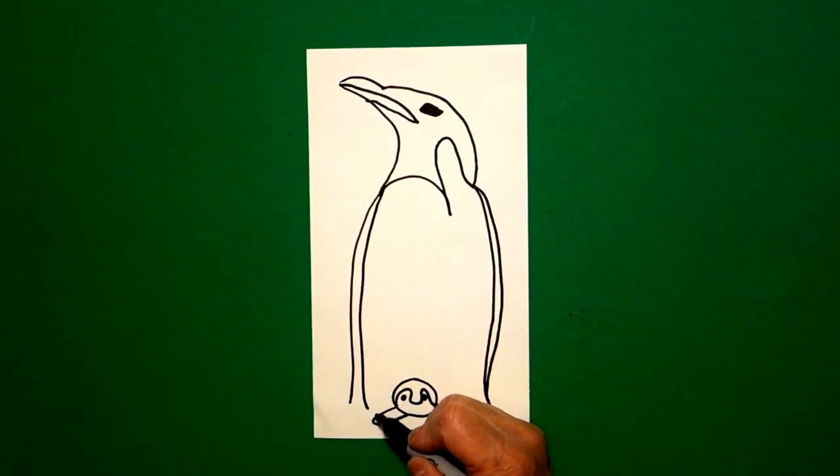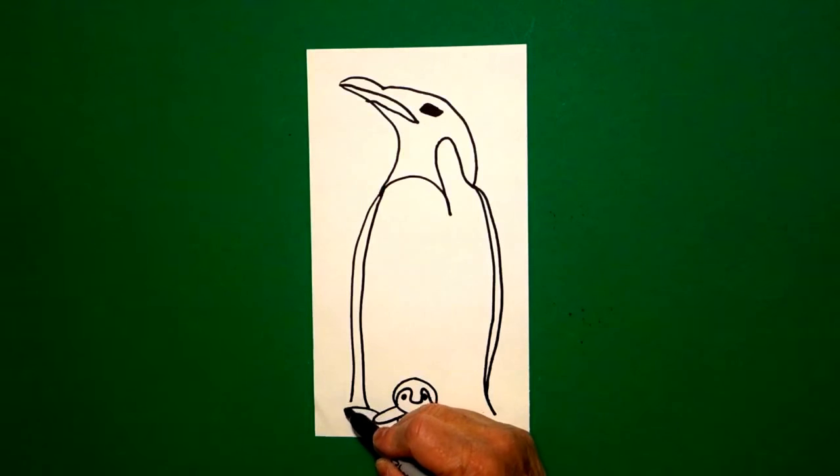On the bottom, starting right about here, I'm going to draw a curved line out, curve line in, two, three, four, curve line up.